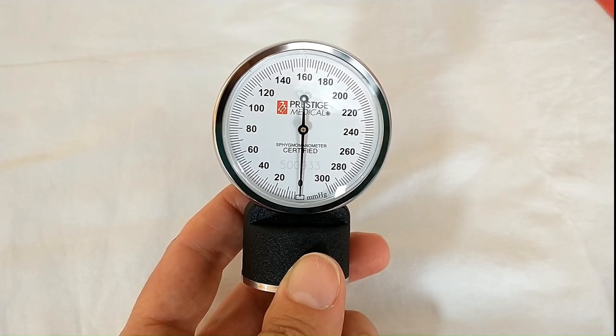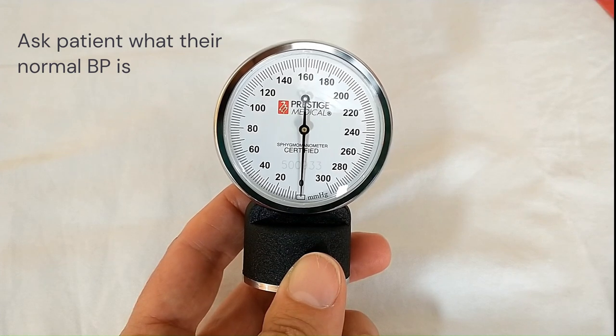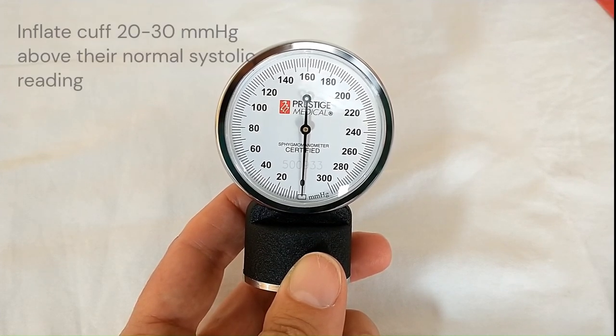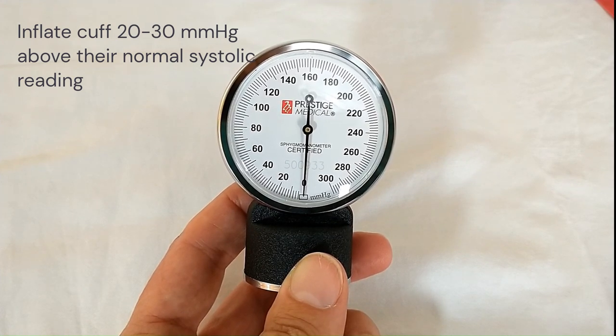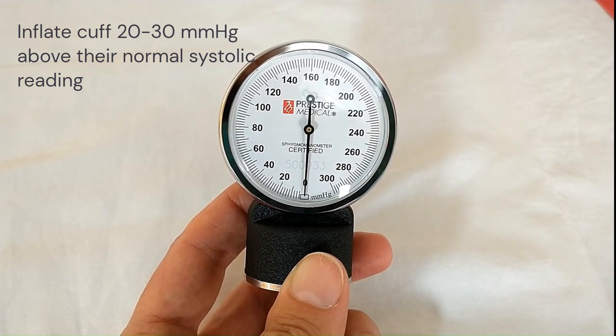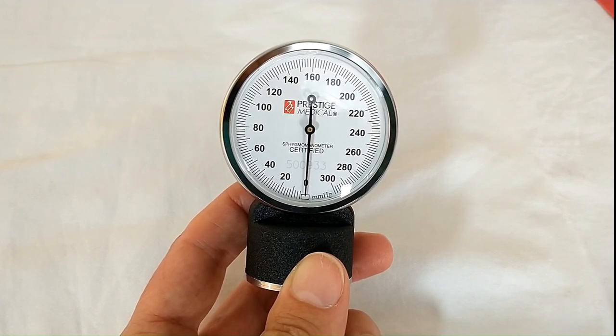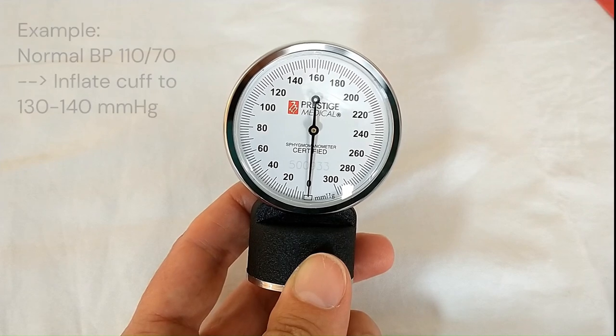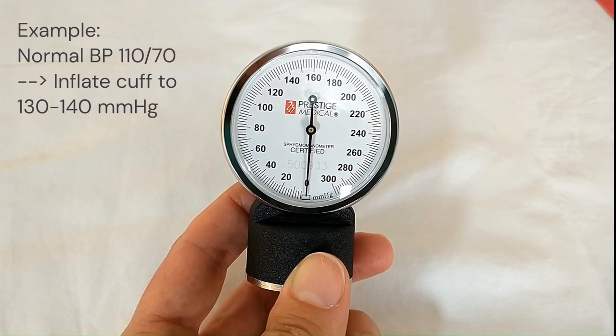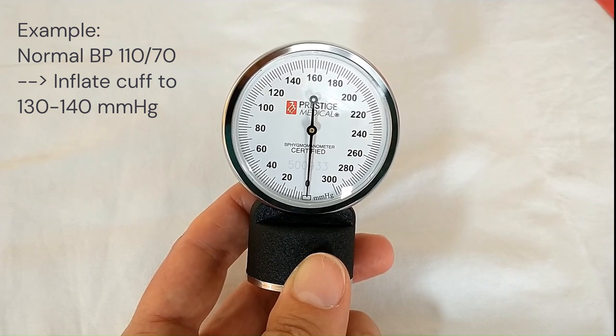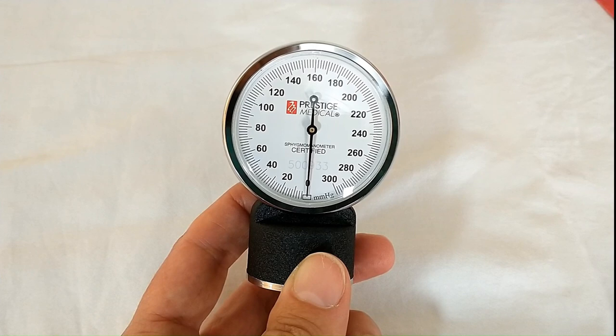It is very important that we assess the patient and ask them what their normal blood pressure is, and then inflate the blood pressure cuff to approximately 20 to 30 millimeters of mercury above their normal blood pressure. So for example, if the normal blood pressure is 110 over 70, we would inflate the cuff to approximately 130 to 140, and then slowly dial it so that you can easily see their normal blood pressure.